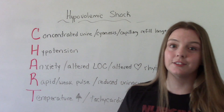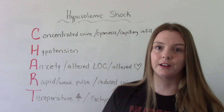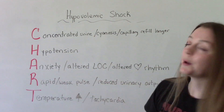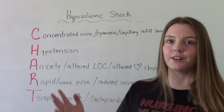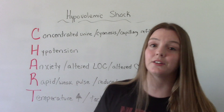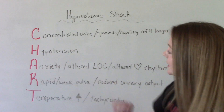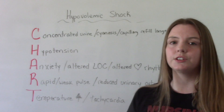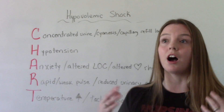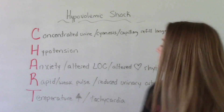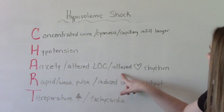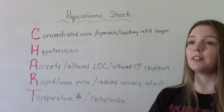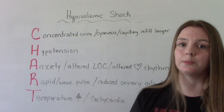They're going to be hypotensive because of the less blood volume. They might be anxious because they're in shock — this is very scary. So anxiety, they might have an altered level of consciousness, they might be unconscious, and then an altered heart rhythm, so if this gets really bad they can have a dysrhythmia.